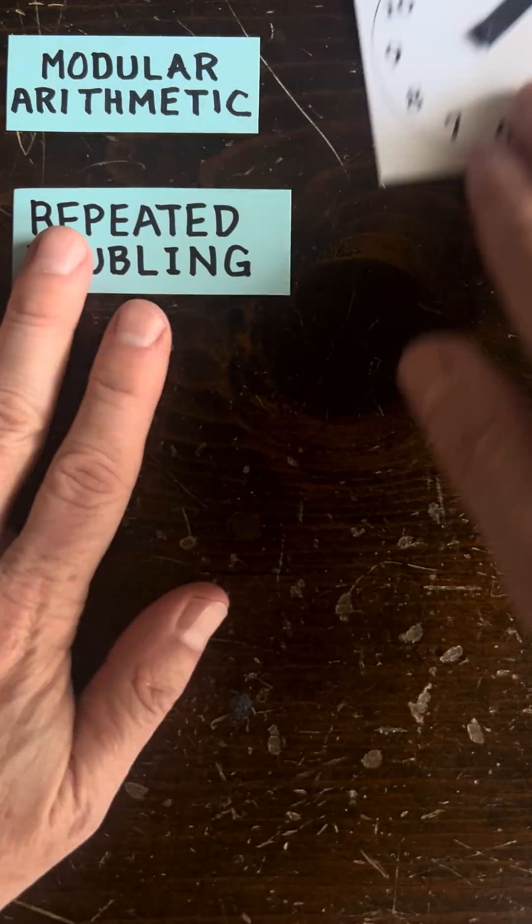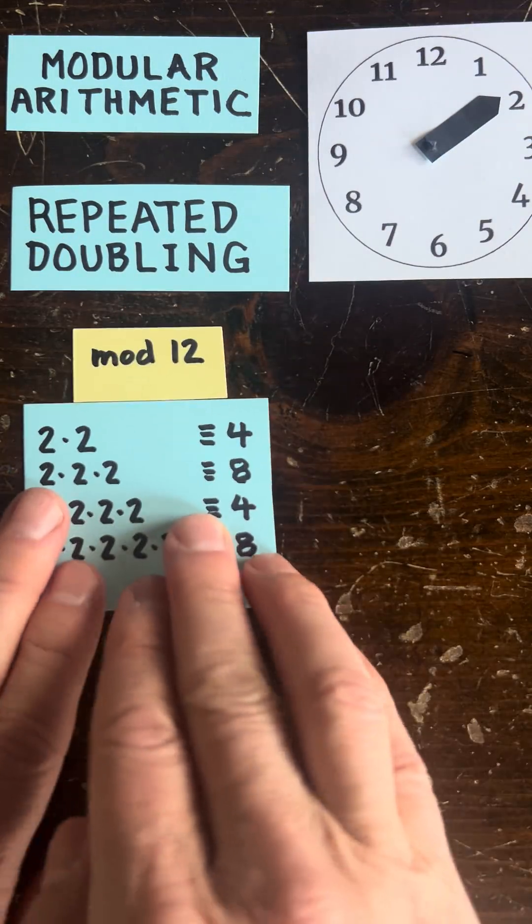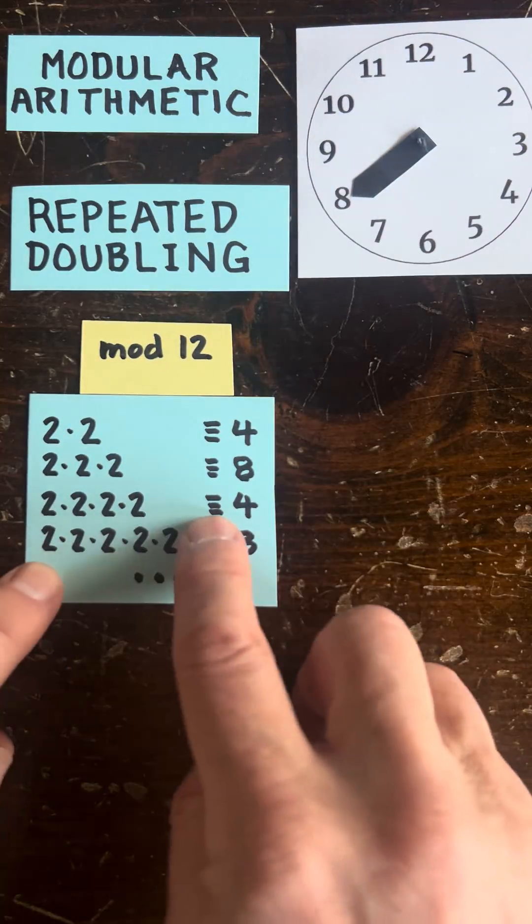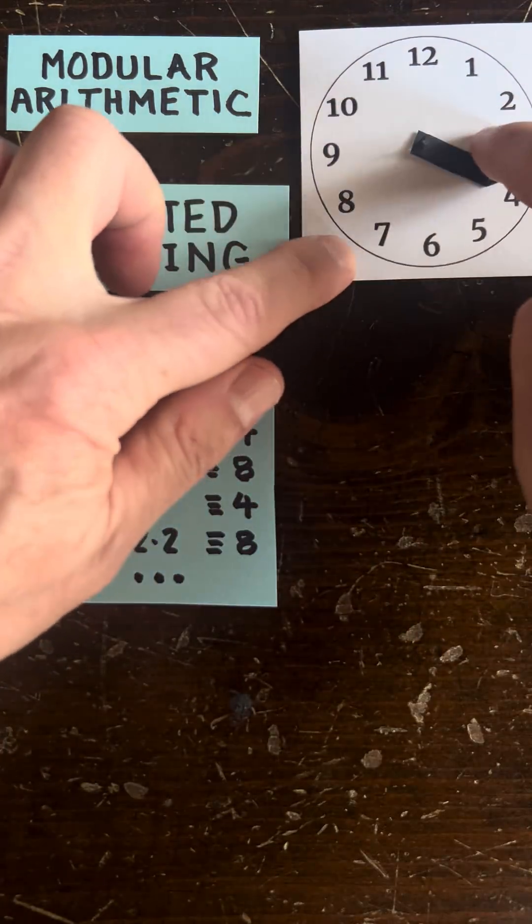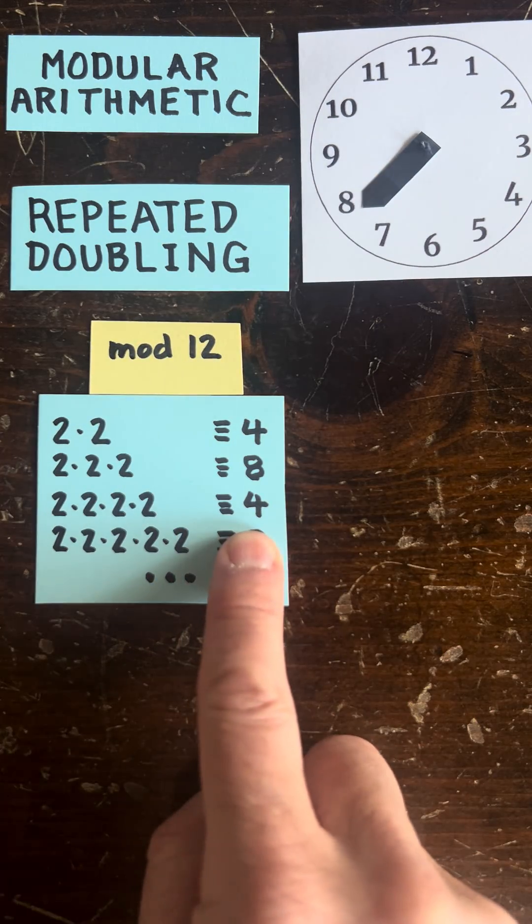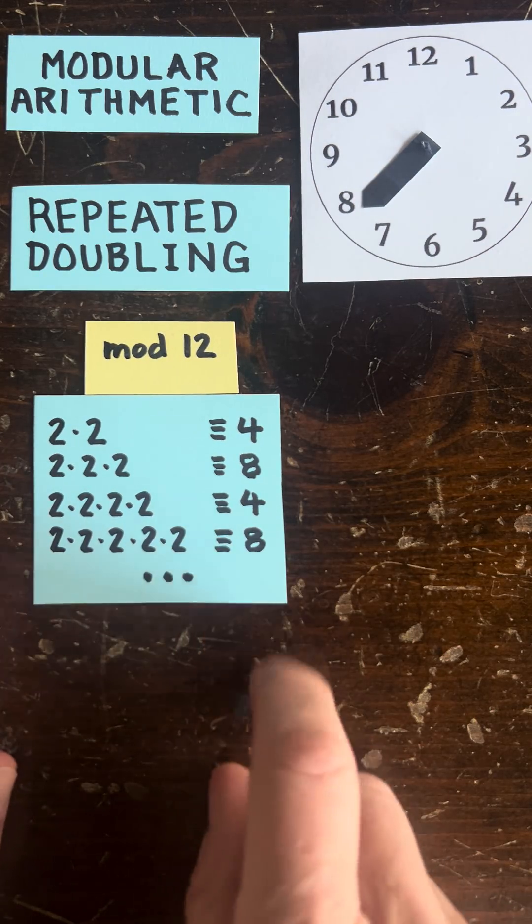Okay, so now let's look at one more thing, which is repeated doubling. So if you start with 2 and double it, you get 4 o'clock, you double it, you get 8 o'clock, you double that, you get 16 o'clock, which is back to 4 o'clock, and then you double that, it's 8 o'clock. So you'll always be either 4 o'clock or 8 o'clock, you'll never be at 1 o'clock.